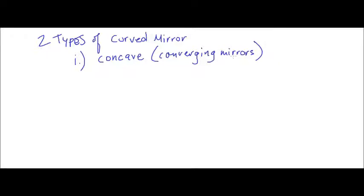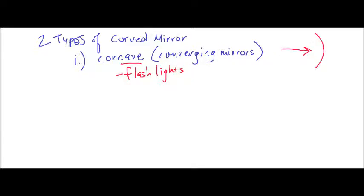Concave mirrors are typically found in objects like flashlights. They have the ability to collect light within the concave shape. I always like to think of the term 'cave' — the rays of light are going inwards to the cave. Flashlights and telescopes are good examples.